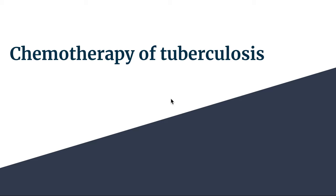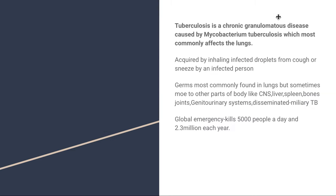In today's lecture, let's talk about the chemotherapy of tuberculosis. Tuberculosis is a chronic granulomatous disease caused by Mycobacterium tuberculosis. Although it commonly affects the lungs, it may also affect other body parts such as the CNS, liver, spleen, bones, and genitourinary system, and it may be disseminated or miliary. It is most commonly acquired by inhaling infected droplets from the cough of an infected person, and it's a global emergency causing almost 5,000 deaths a day and 2.3 million deaths each year.